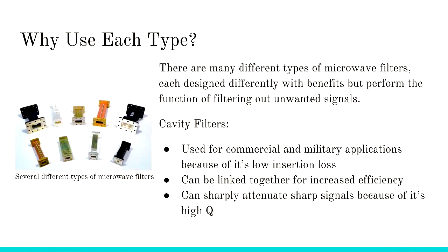Why use each type of microwave filter? There are many types of microwave filters, each designed differently with benefits, but all perform the function of filtering out unwanted signals. Cavity filters are used for commercial and military applications because of their low insertion loss. They can be linked together for increased efficiency and can sharply attenuate signals because of their high Q.